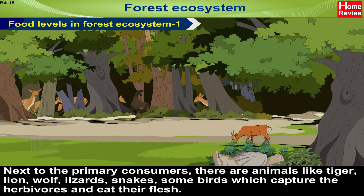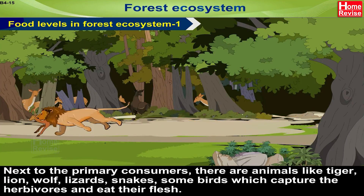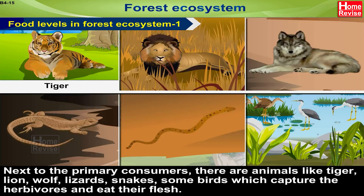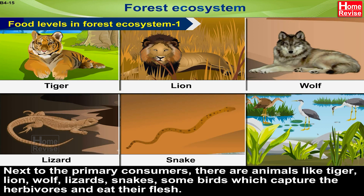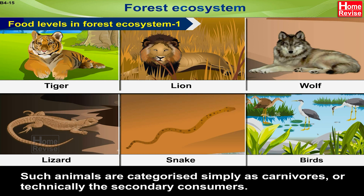Next to the primary consumers, there are animals like tiger, lion, wolf, lizards, snakes, and some birds, which capture the herbivores and eat their flesh. Such animals are categorised simply as carnivores, or technically the secondary consumers.